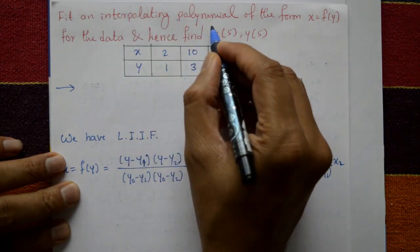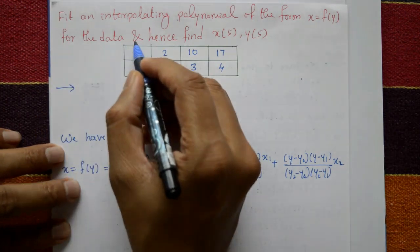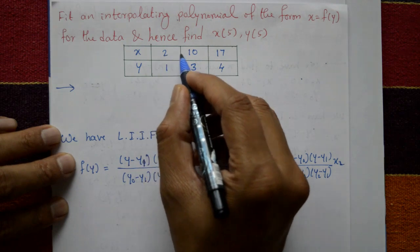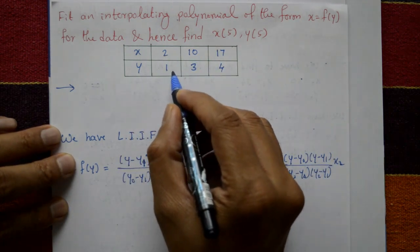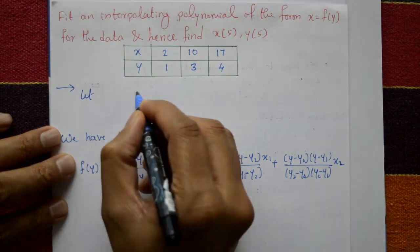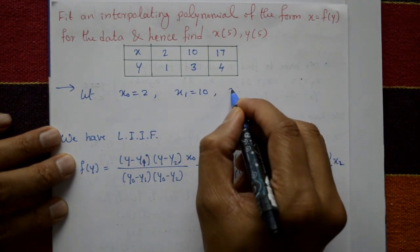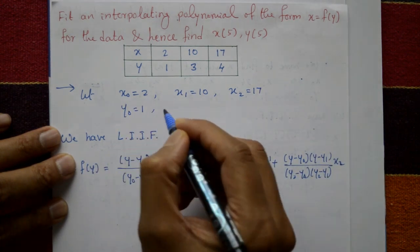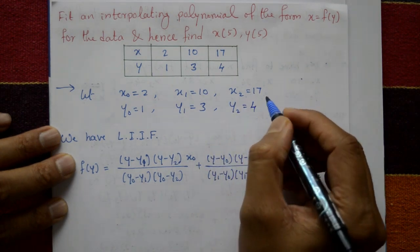Fit an interpolating polynomial of the form x = f(y) for the given data, and hence find x(5) and y(5). The x values are 2, 10, 17, and the corresponding y values are 1, 3, 4. So we write x₀ = 2, x₁ = 10, x₂ = 17, and y₀ = 1, y₁ = 3, y₂ = 4.